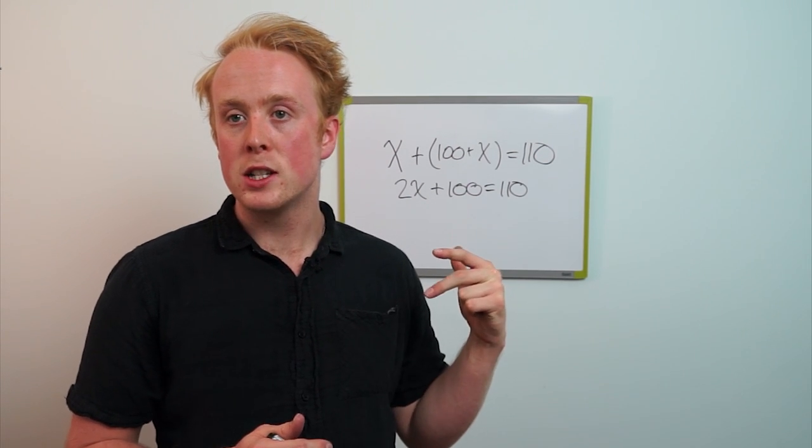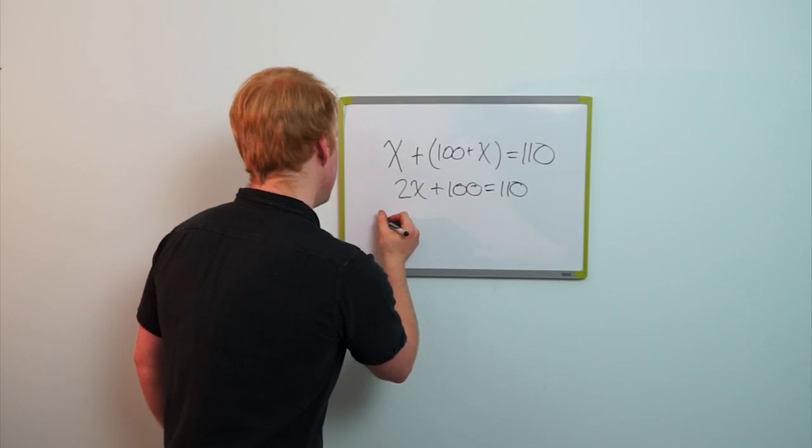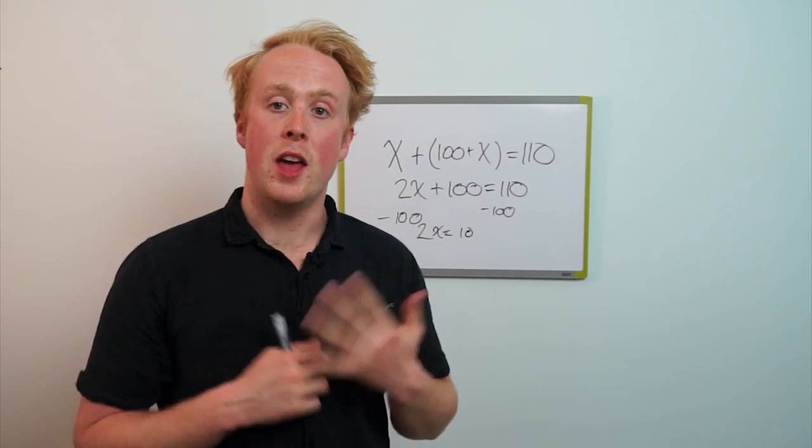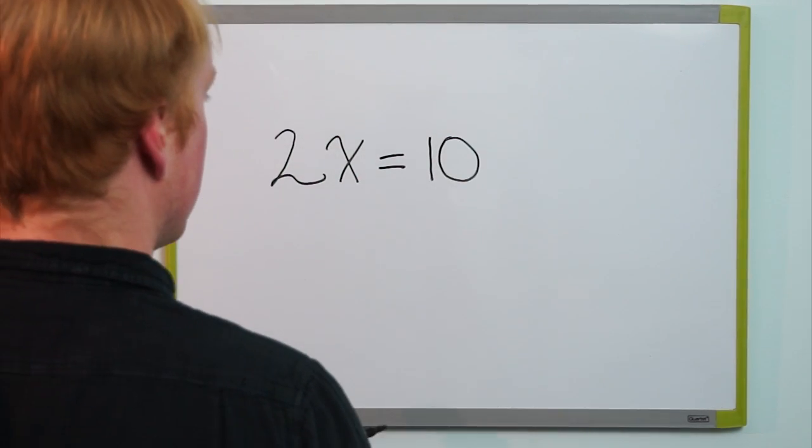Now simply by the properties of basic algebra we can simply subtract one hundred from each side of the equation, and that will leave us with two x is equal to ten.